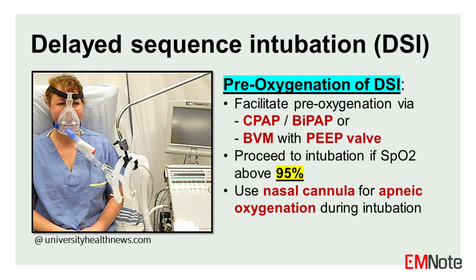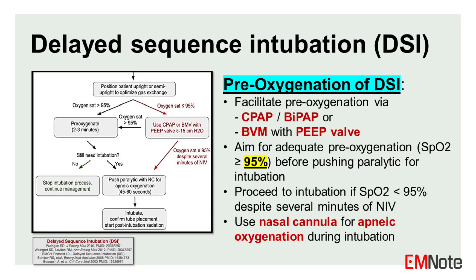Pre-oxygenation. Place a non-rebreather mask and provide nasal cannula oxygen at 15 liters per minute. Position the patient upright or semi-upright to optimize gas exchange. If the oxygen saturation is below 95%, proceed with CPAP, BiPAP, or BMV with PEEP valve 5–15 cm H2O for several minutes. Aim for SpO2 95% or more before pushing paralytic for intubation.